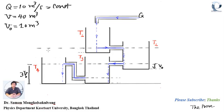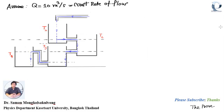We consider the water for each tank at any time, starting at t equals 0. Q equals 10 mq per second and V equals 40 mq. If the water volume is greater than 40 mq, the water will overflow and fall out at the same time.